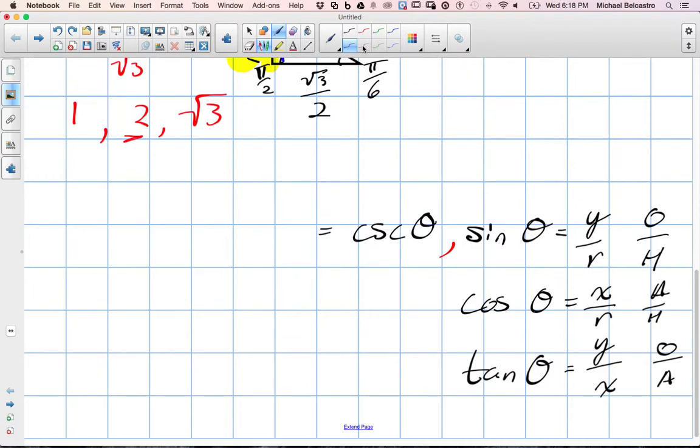So because this is related to cosecant theta, it would be equal to the reciprocal of this. So instead of y over r, it would be r over y. If we relate cos to secant theta, it's the reciprocal of it, so the reciprocal would be r over x. Same idea, if we have cotangent, cotangent theta equals the reciprocal of that, which is x over y.